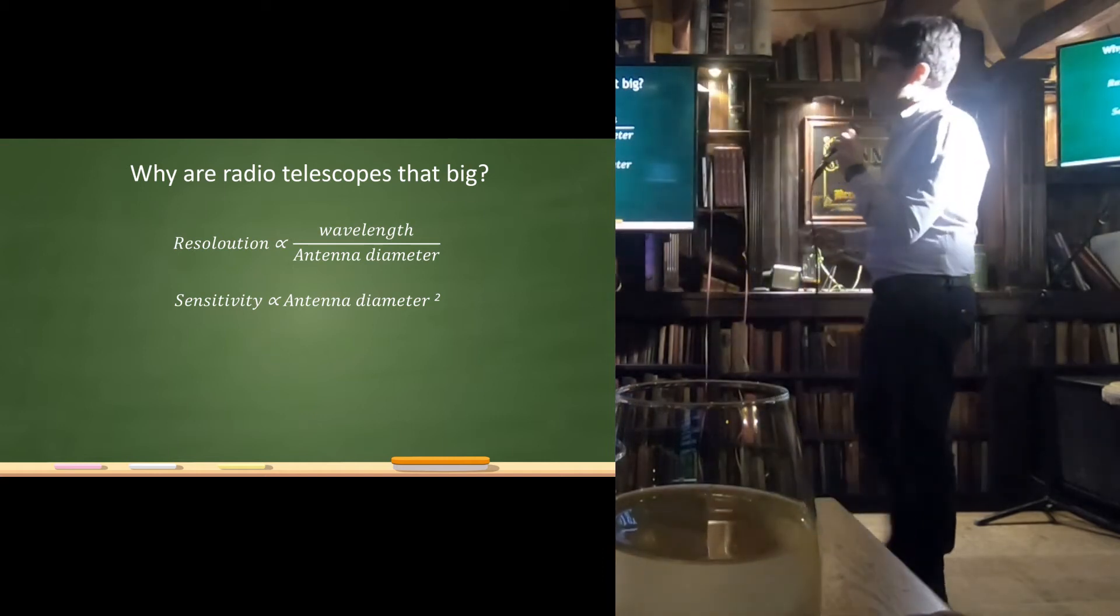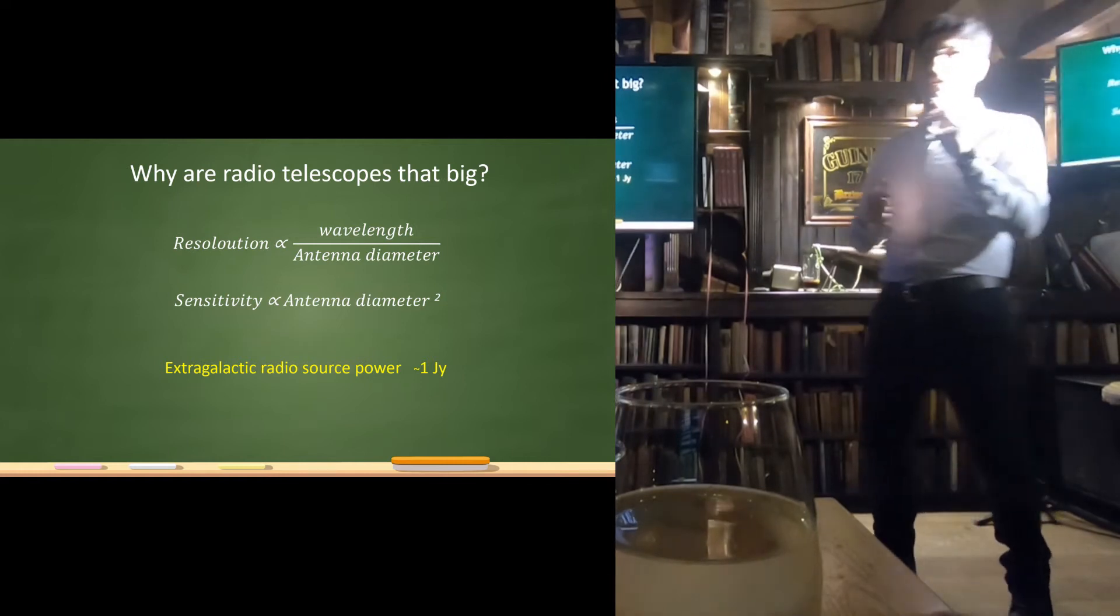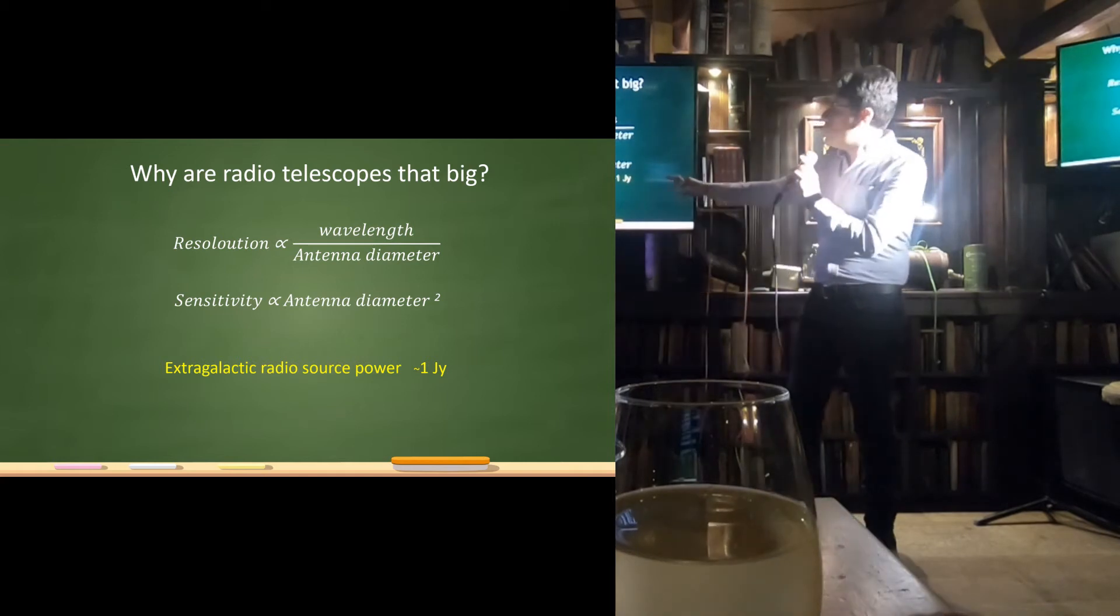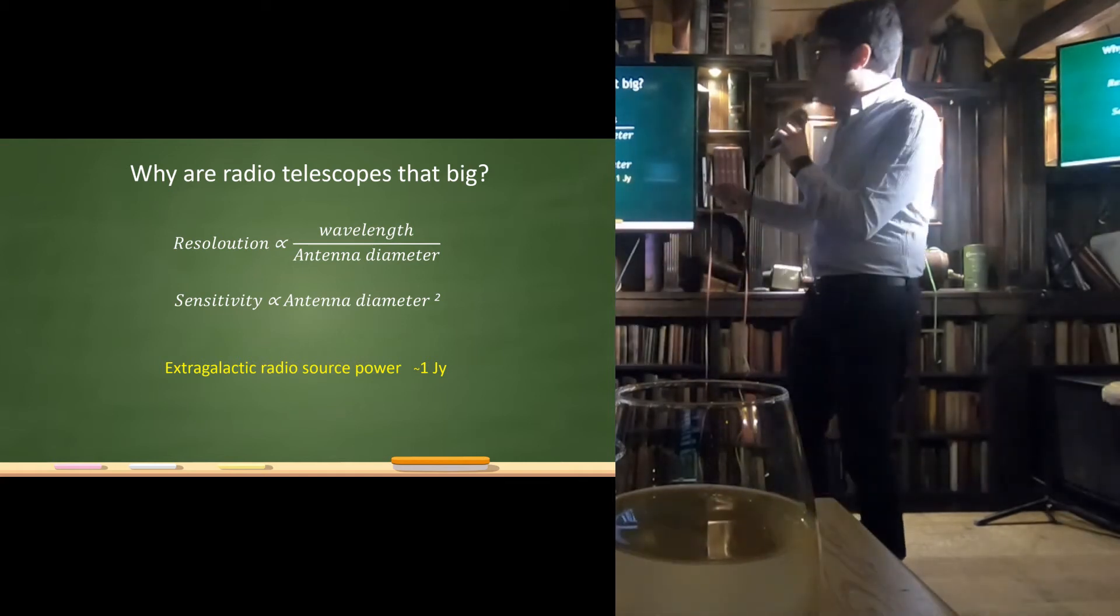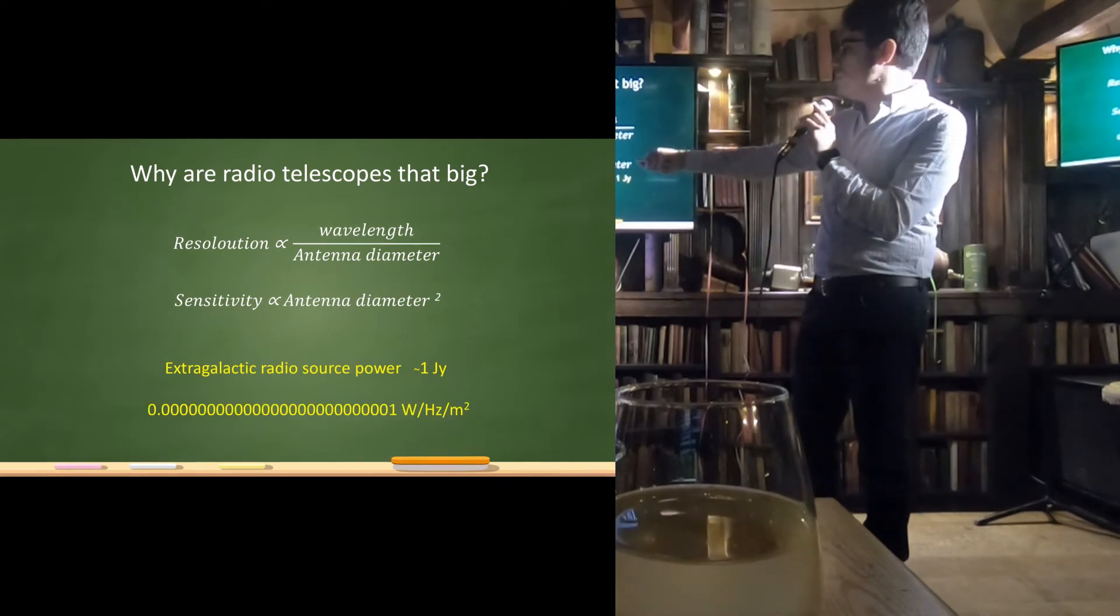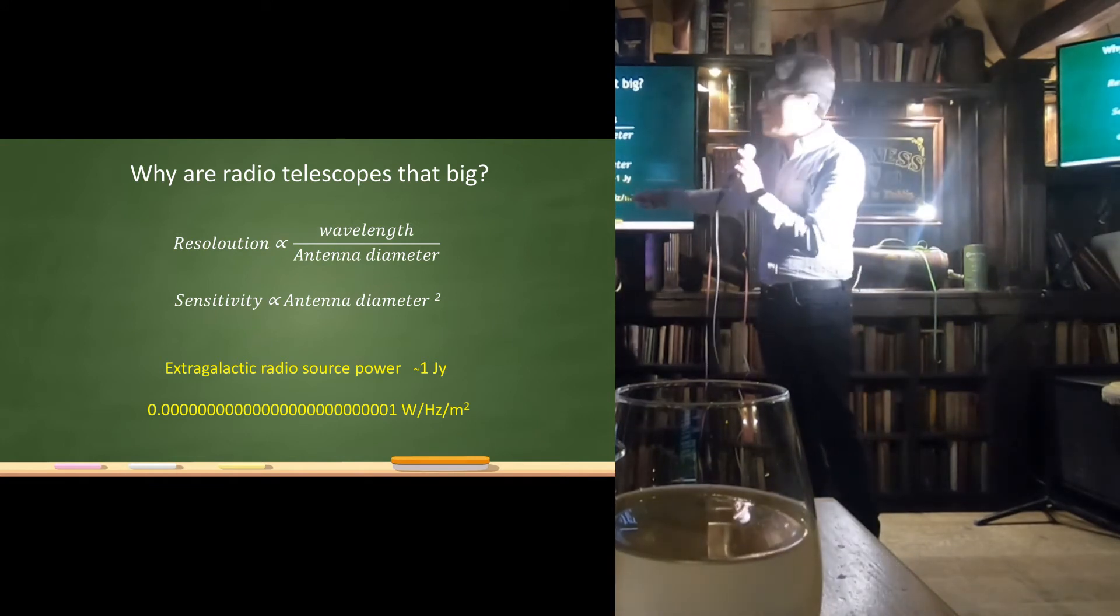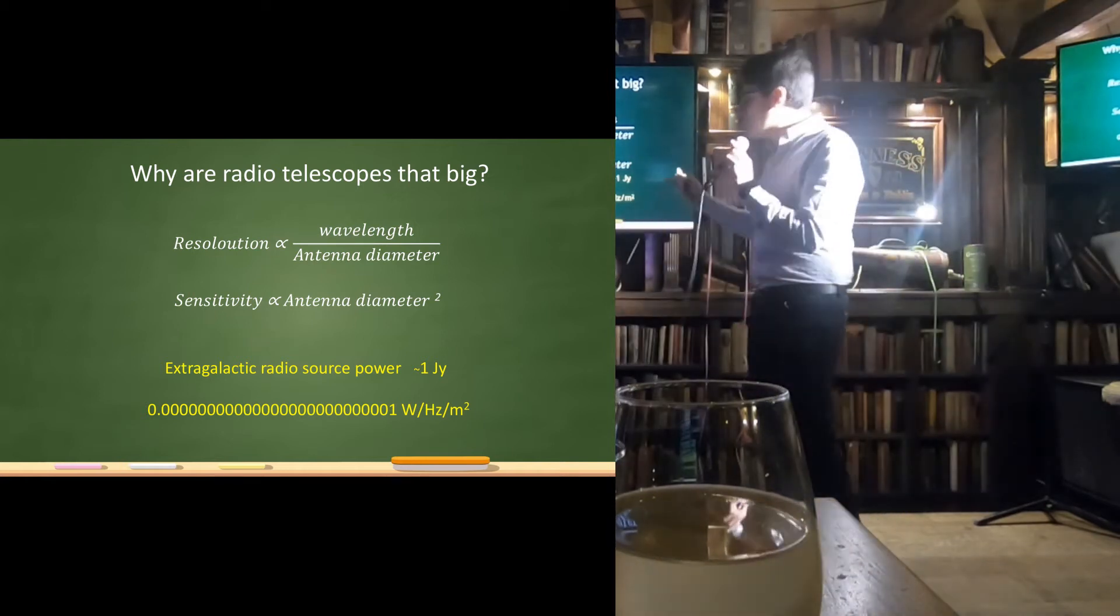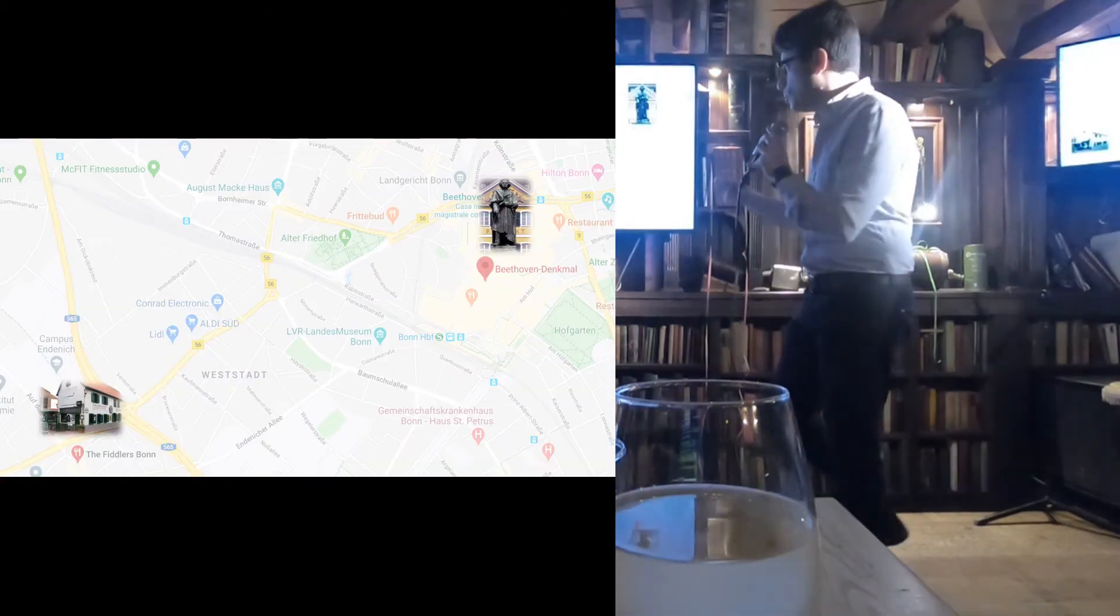Just to make you understand, usually when we observe an extragalactic radio source, the power that we want to measure is something of the order of one Jansky. So, Jansky is a unit that we use in radio astronomy which corresponds to 0.0000000 - it's 26 zeros, guys - one watt per hertz per meter squared. You know, it's really, really, really faint. This is why we need such a dish.